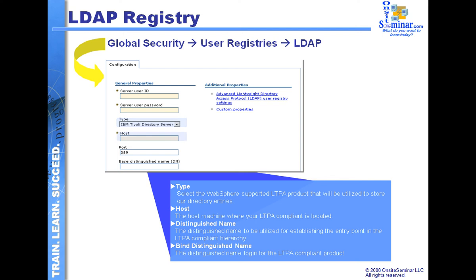We have the host information, so my host server name is going to go here. The port address for an LDAP architecture is always going to be the base address of port 389. And the last thing we have here is what's called the distinguished name. The distinguished name is basically the root area, the top-end login aspect for the LDAP architecture itself.